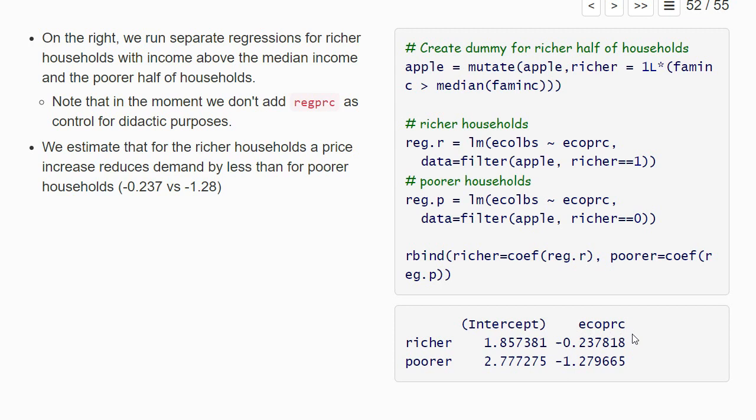So we find that for the poorer half of households, a price increase has a stronger negative effect on demand. So they reduce demand stronger if the price increases than the richer households. That actually seems quite intuitive. And even so, we don't know whether the differences are significant here. It looks at least as if there are heterogeneous effects in our experimental data set.